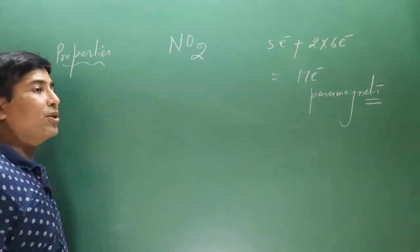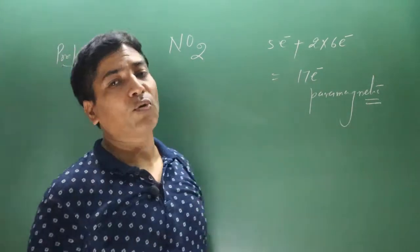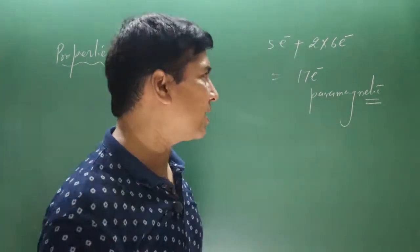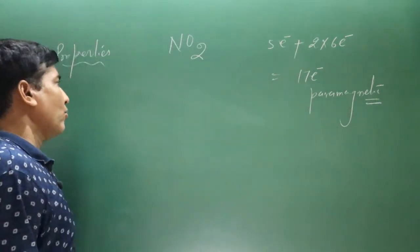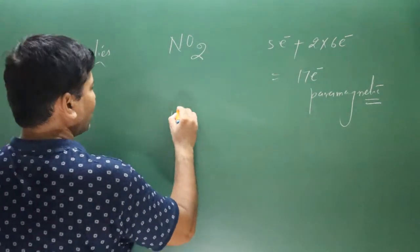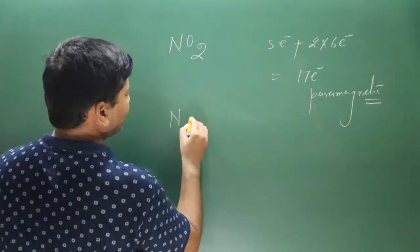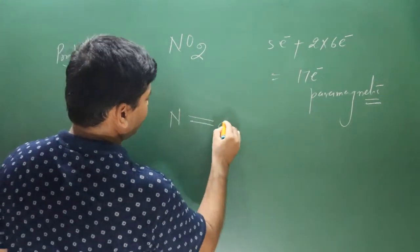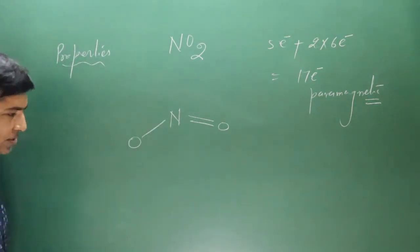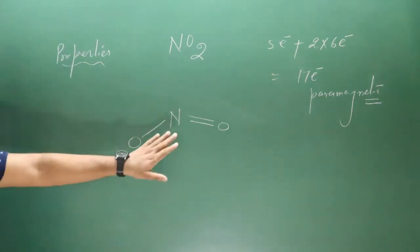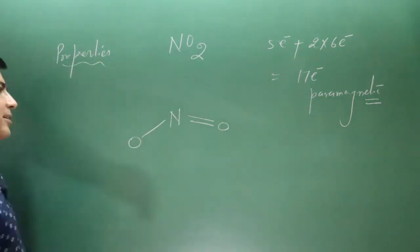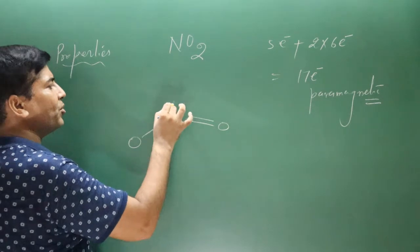Nitrogen can form only three bonds because it does not have a vacant orbital. In NO2, nitrogen forms one bond with each oxygen. The valency of nitrogen is satisfied and it has one lone pair.